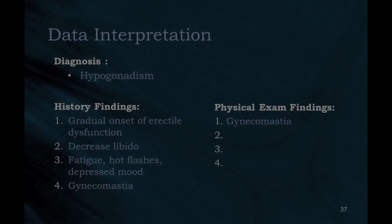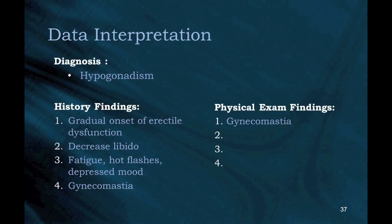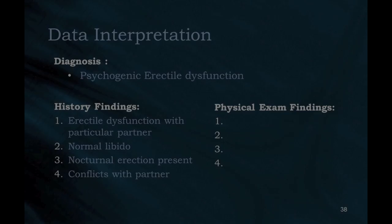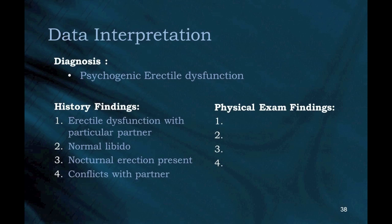Diagnosis: Hypogonadism. History findings: (1) Gradual onset of erectile dysfunction; (2) Decreased libido; (3) Fatigue, hot flashes, depressed mood; (4) Gynecomastia. Physical exam findings: (1) Gynecomastia. Diagnosis: Psychogenic erectile dysfunction. History findings: (1) Erectile dysfunction with a particular partner; (2) Normal libido; (3) Nocturnal erection present; (4) Conflicts with partner. We wish you happy reading.